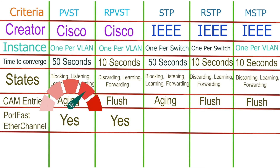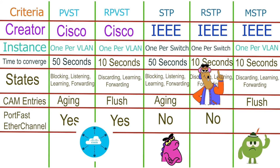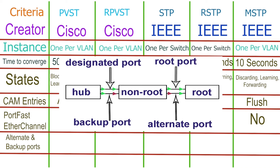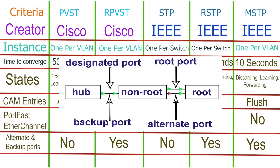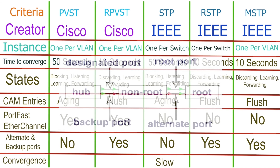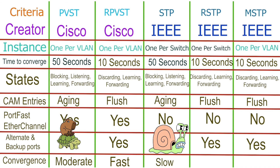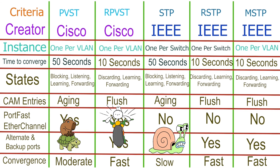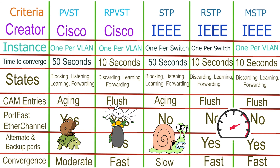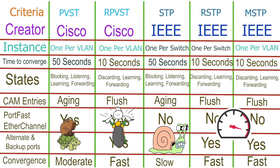PVST and RPVST use port fast and EtherChannel features to speed up convergence. Since these are Cisco-specific features, RSTP, RPVST, and MSTP do not use these. In addition to root and designated ports, RSTP, RPVST, and MSTP also use alternate and backup ports. The alternate port helps them reach the root bridge when the root port fails. Similarly, the backup port helps them reach the local segment when the designated port fails. Convergence is slow in STP. Port fast and EtherChannel help PVST reach convergence a bit faster. Using alternate and backup ports, flushing CAM table entries, excluding the listening state, and reducing the time of remaining states make convergence fast in these variations.